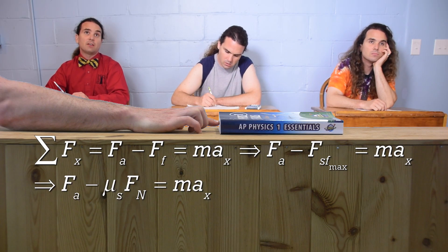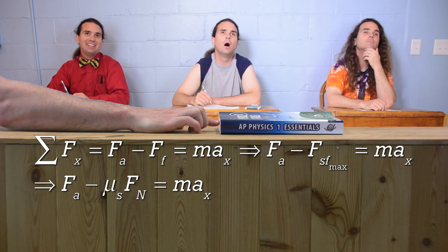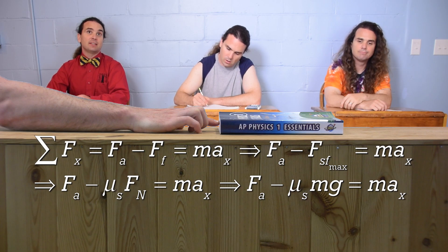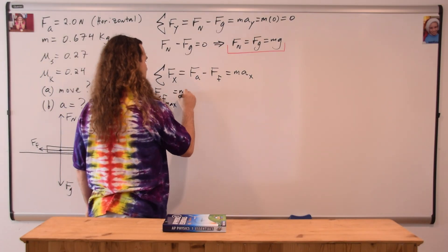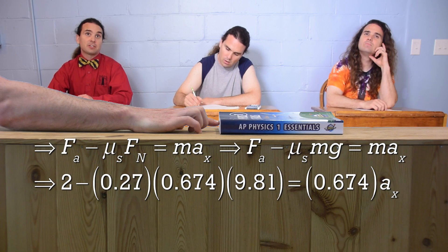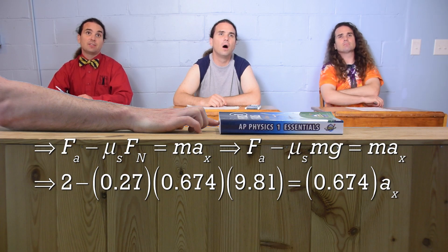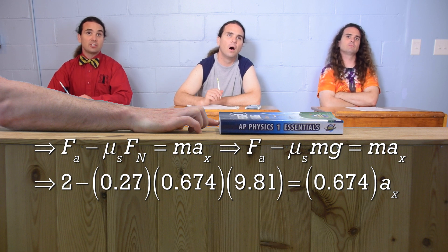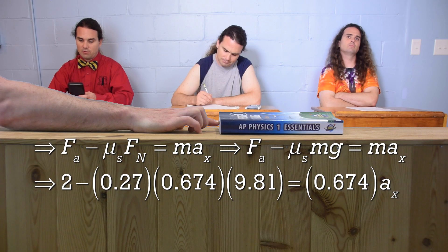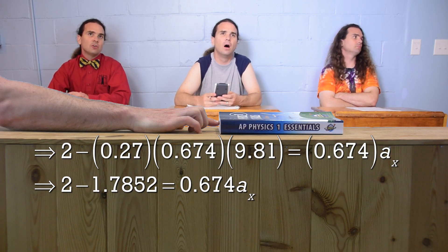We can substitute in the coefficient of static friction times the force normal for the maximum force of static friction. And now from our equation holster, we can substitute in mass times the acceleration due to gravity for the force normal. At this point, the only variable we don't know is the acceleration in the x direction. Now we substitute in numbers: the force applied is 2 Newtons minus the coefficient of static friction, 0.27, times the mass, 0.674 kilograms, times 9.81 meters per second squared, which equals 0.674 times the acceleration in the x direction. 0.27 times 0.674 times 9.81 is 1.7852.